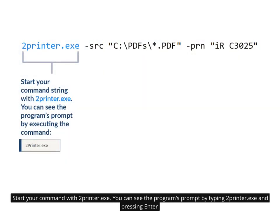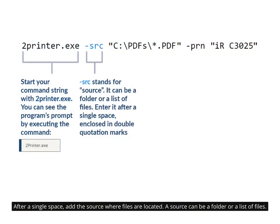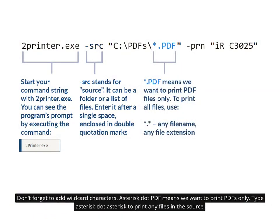Start your command with 2Printer.exe. You can see the program's prompt by typing 2Printer.exe and pressing Enter. After a single space, add the source where files are located. A source can be a folder or a list of files. Don't forget to add wildcard characters: asterisk.pdf means we want to print PDFs only. Type asterisk.asterisk to print any files in the source.